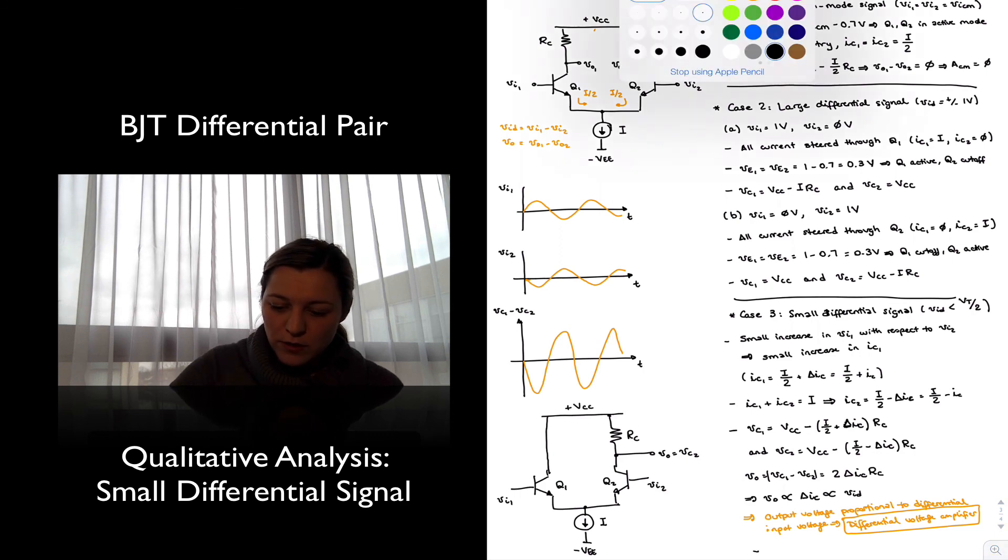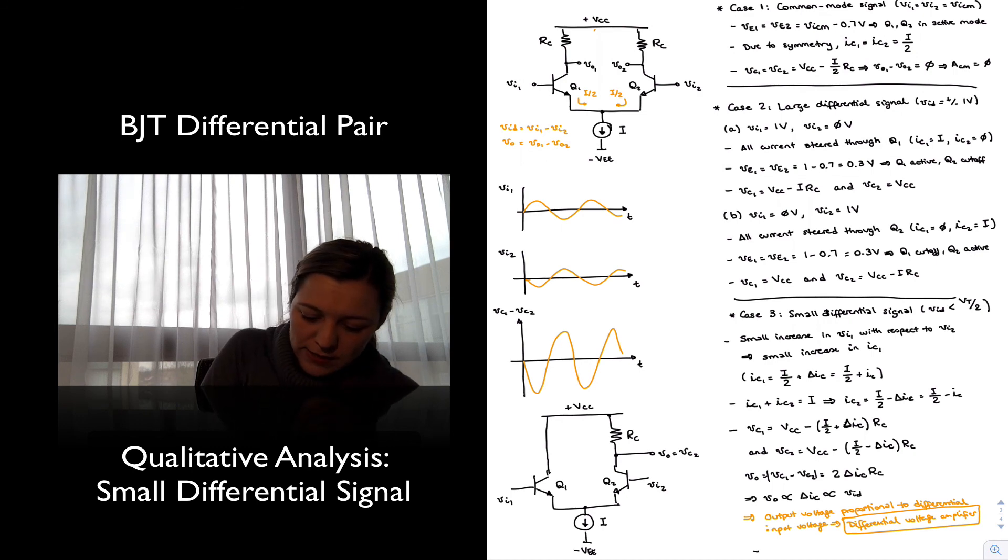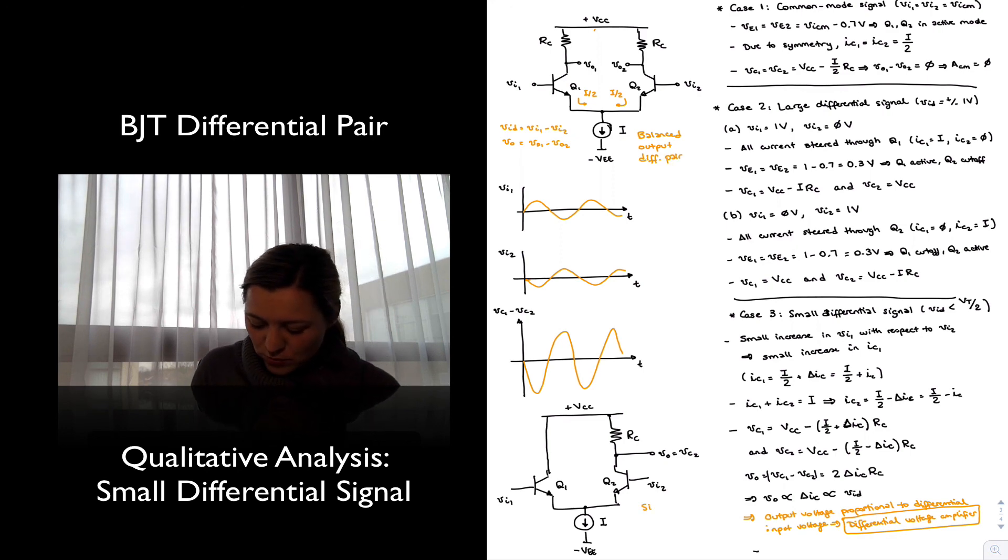And so this will be the differential pair with balanced output. And this will be a single-ended output diff pair. And we're going to be looking at the characteristics of both, and also trying to compare the characteristics of both. How do they compare in terms of common mode gain, differential gain, as well as common mode rejection ratio.